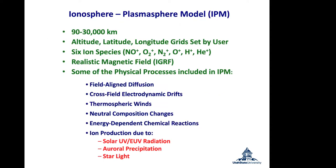The Ionosphere-Plasmosphere Model (IPM) covers altitudes from 90 to 30,000 kilometers. Six ion species are included: NO+, O2+, N2+, O+, H+, and He+. A realistic magnetic field is used — the IGRF, the International Geomagnetic Reference Field. Physical processes included are field-aligned diffusion, cross-field electrodynamic drifts, thermospheric winds, neutral composition changes, energy-dependent chemical reactions, and ion production due to solar UV and EUV radiation, auroral precipitation, and starlight. Starlight production is important in the E region at night.